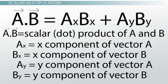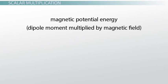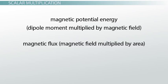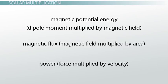Aside from work, other examples of scalar products include magnetic potential energy — which is dipole moment multiplied by magnetic field — magnetic flux, which is magnetic field multiplied by area, and power, which is force multiplied by velocity.